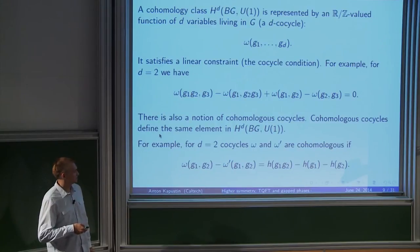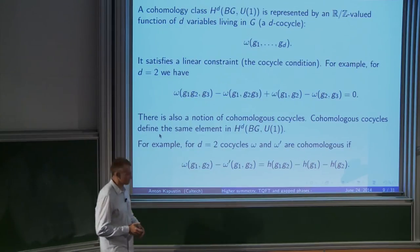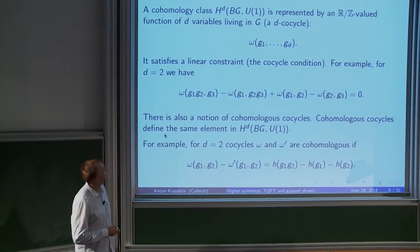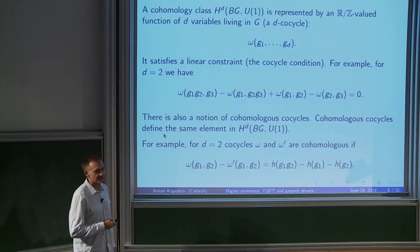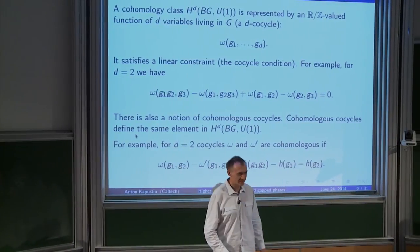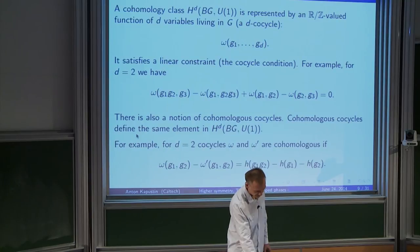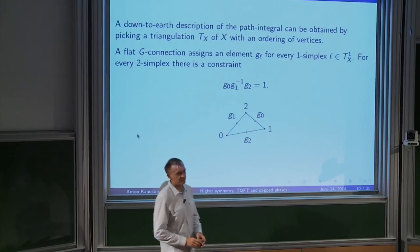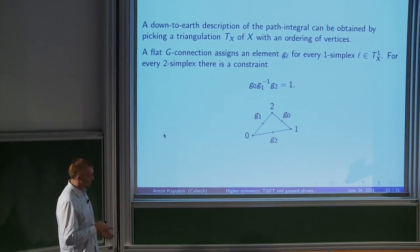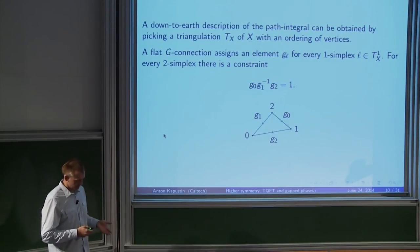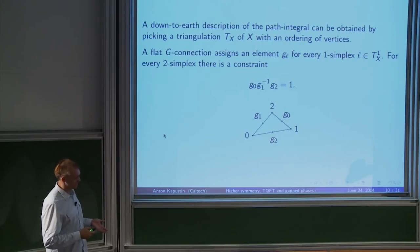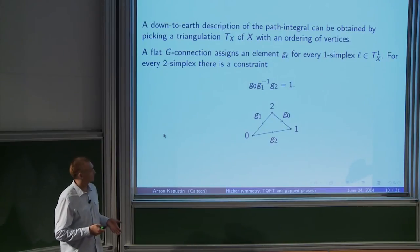Using this explicit description of cocycles, one can also give an explicit description of the Dijkgraaf-Witten theory — how to actually compute the partition function. First, you choose a triangulation of your manifold X. A flat G-connection can be thought of as a one-cocycle with values in the group — an assignment of an element of the group to every one-simplex, with a constraint. You sum over these variables with constraints, and the weight assigned to each configuration is a sum over all D-simplices, where each D-simplex contributes the value of the cocycle on the D elements g₁ to g_D. This looks like a lattice gauge theory, except there's a constraint for each two-simplex.